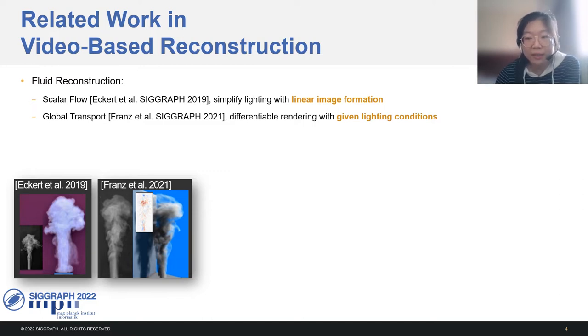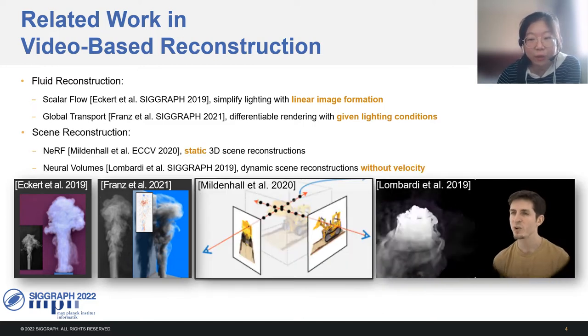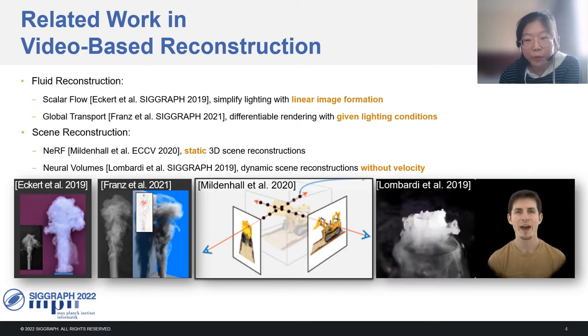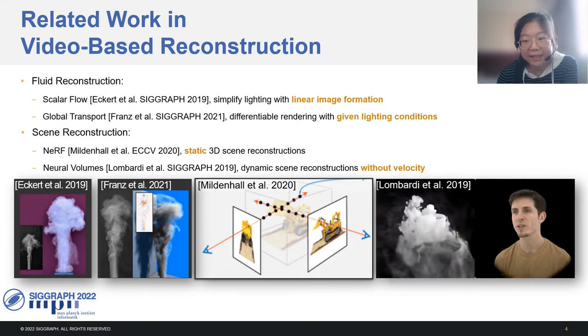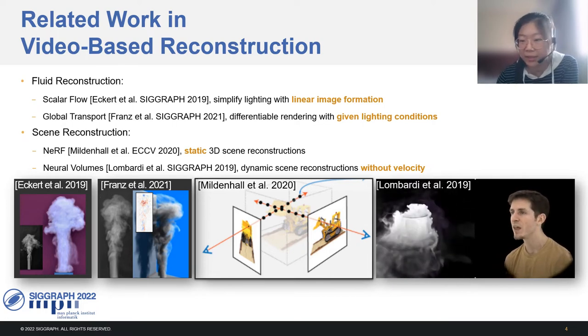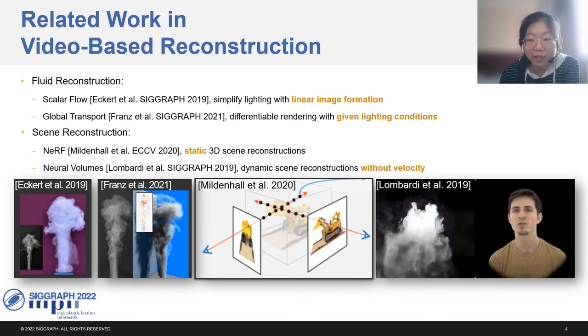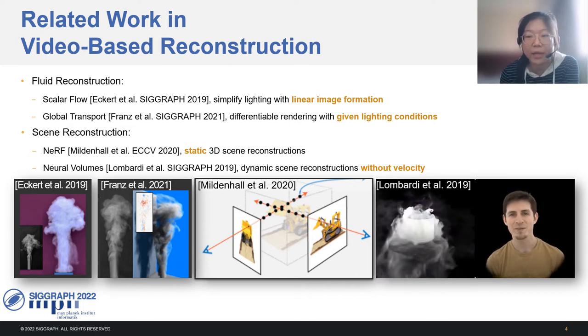For scene reconstruction, NERF provides a continuous neural representation that only supports static scenes. Neural volumes encodes dynamic scenes with inverse mapping, but does not provide velocity or consider any physical constraints.